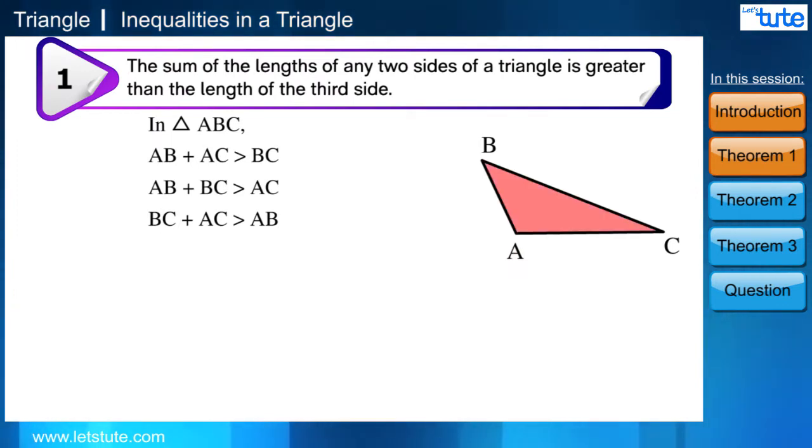In a triangle, the measure of an angle depends on the length of the side opposite to it. Now friends, can you tell me which is the longest side and the largest angle in the given triangle ABC? The longest side is BC and the largest angle is A.